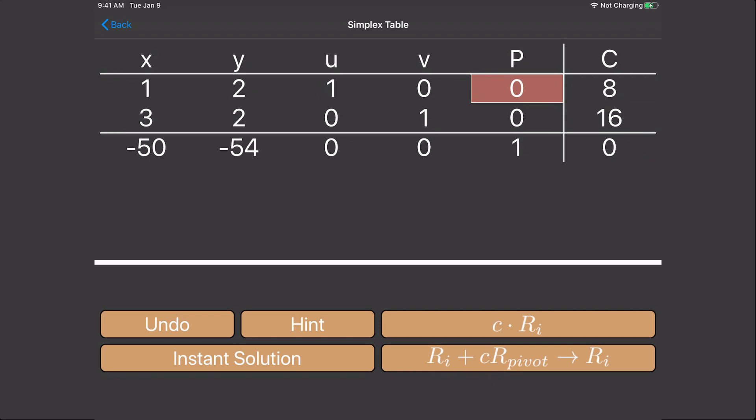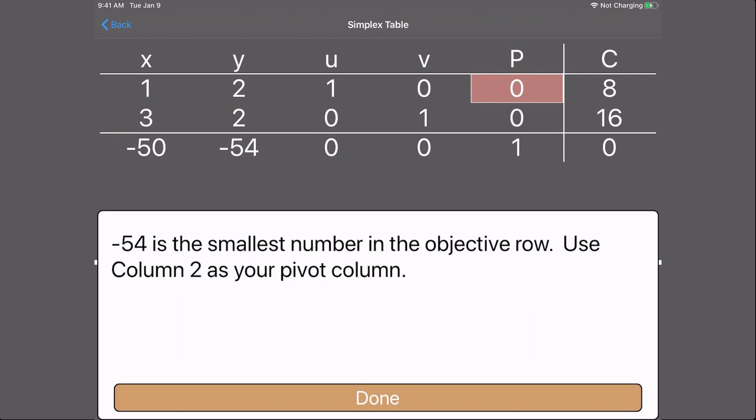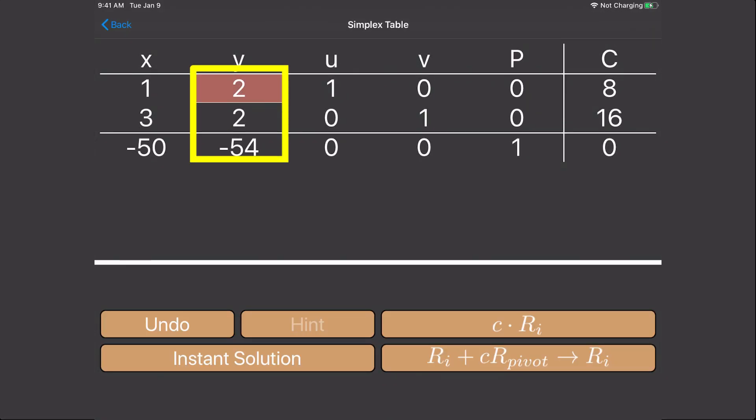Now we're ready to start. We need to identify the pivot element. Now according to the hints, we need to check if there are any negative numbers in the constant column. Now since there are not any negatives, we look for the smallest negative in the bottom row. Negative 54 is the smallest negative. This means our pivot column is column 2.